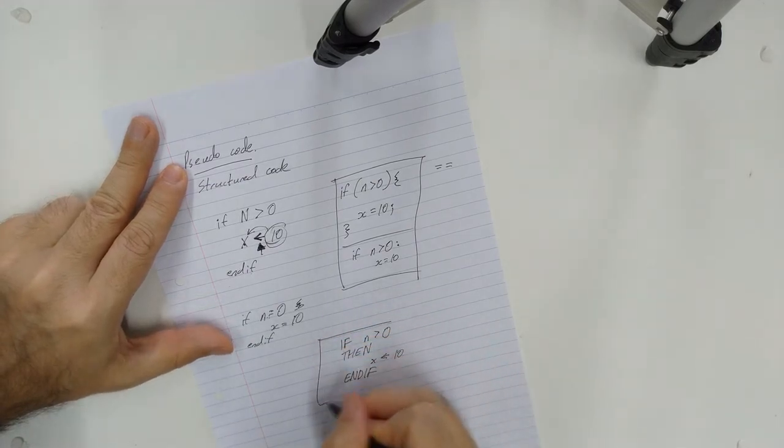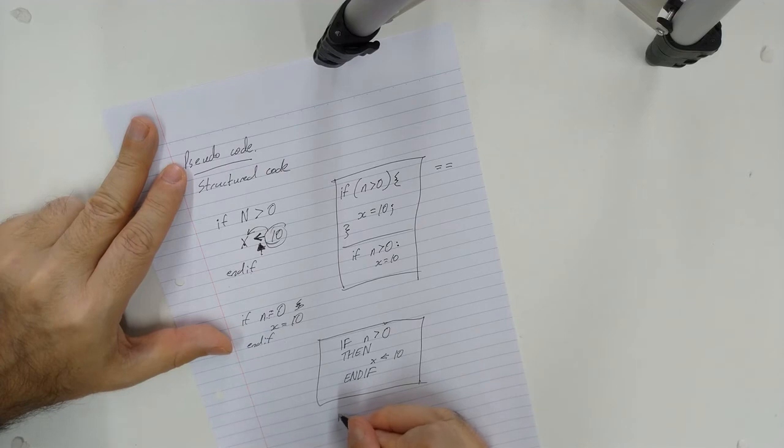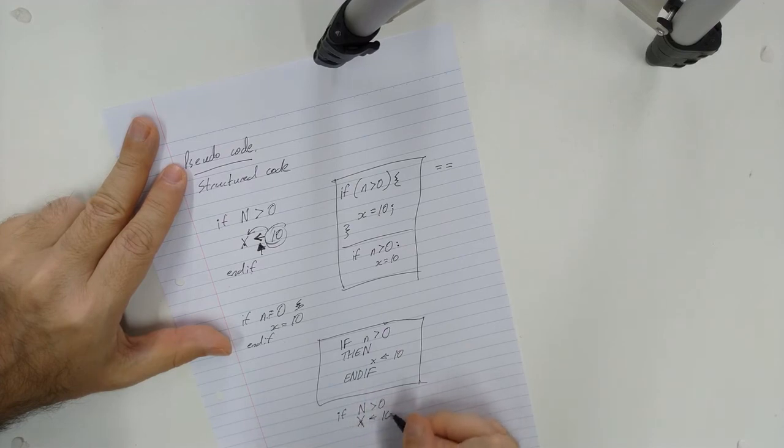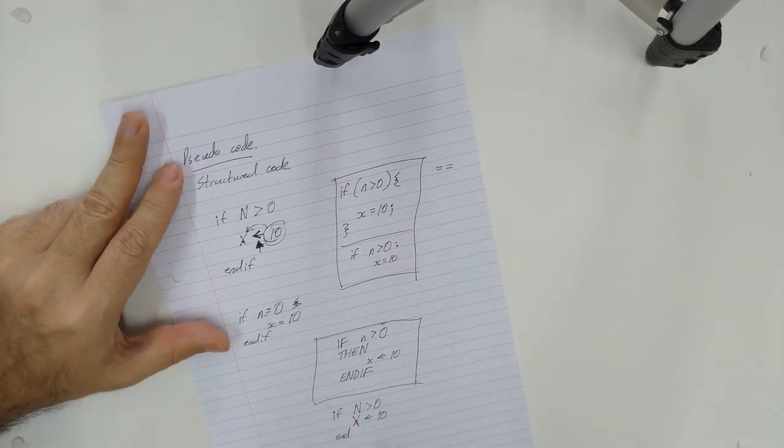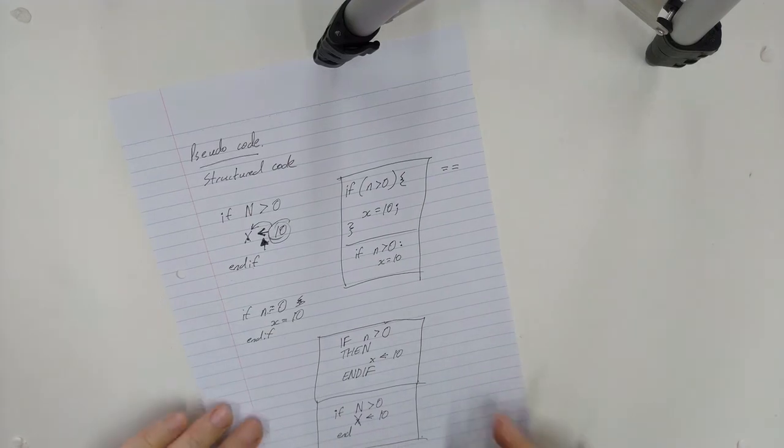That is what that will look like in the IGCSE, whereas in the Diploma course it would be lowercase if, uppercase N is equal to zero. They don't then indent and put this THEN word on a new line; they'll just say X—big X—equals 10, and I think they just say 'end' instead of 'end if'. So be prepared that there will be two different syntaxes for you to get used to, especially if you're doing the IGCSE and then you're going to follow on to do the Diploma.